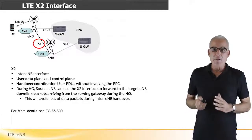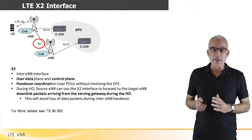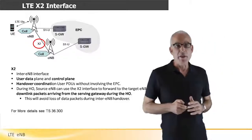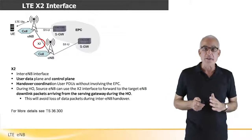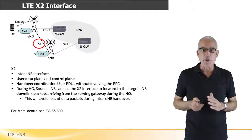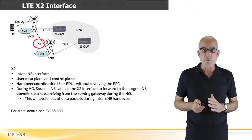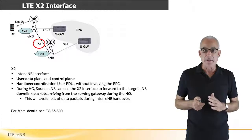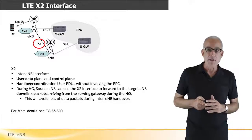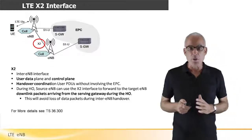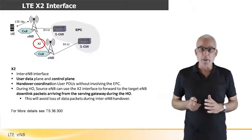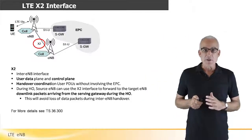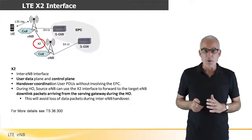LTE is the first cellular technology that mandates a direct link between the base stations. In previous generations, the RNC was the entity responsible for managing the end-off and forwarding the related data. Since LTE does not include an RNC, the end-off related communication is done directly through the X2 interface.